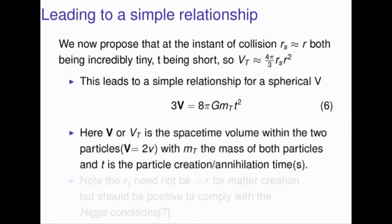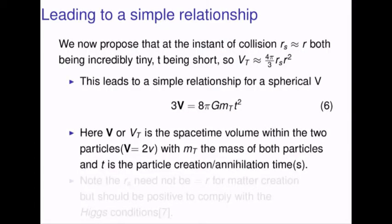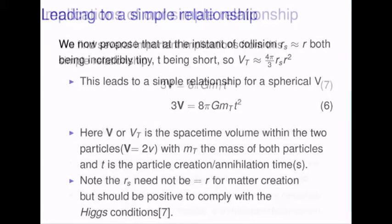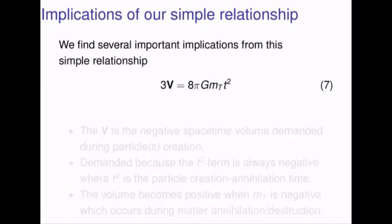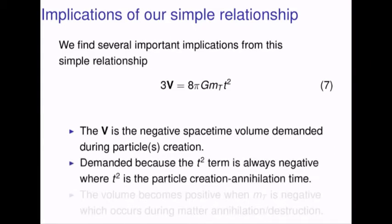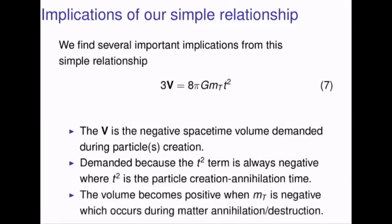Here V, or as we might put it V sub t, is the spacetime volume within the two particles. With M sub t the mass of both particles, and t is the particle creation and annihilation times. Note that R sub s need not be equal to R for matter creation, but should be positive to comply with the Higgs condition, as in our reference seven. We find several important implications from this simple relationship, equation seven. The volume is the negative spacetime volume demanded during particle creation — this is demanded because the t squared term is always negative, where t squared is the particle creation-annihilation time. The volume becomes positive when M sub t is negative, which occurs during matter annihilation and destruction.